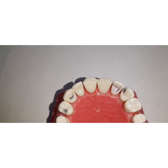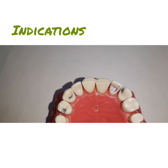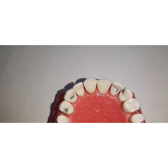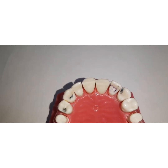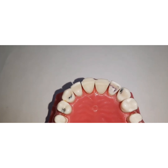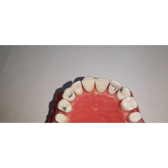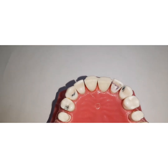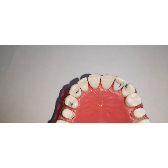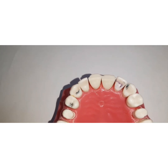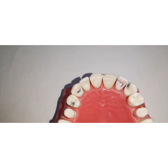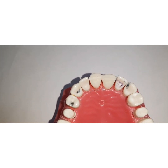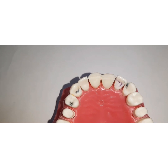What are the indications for porcelain laminate veneers? They are indicated for discolored teeth with intrinsic staining such as tetracycline stains, cases of enamel hypoplasia, mild diastema where spacing between teeth can be closed, correcting mild forms of malformed anterior teeth, and some mild forms of malocclusion.